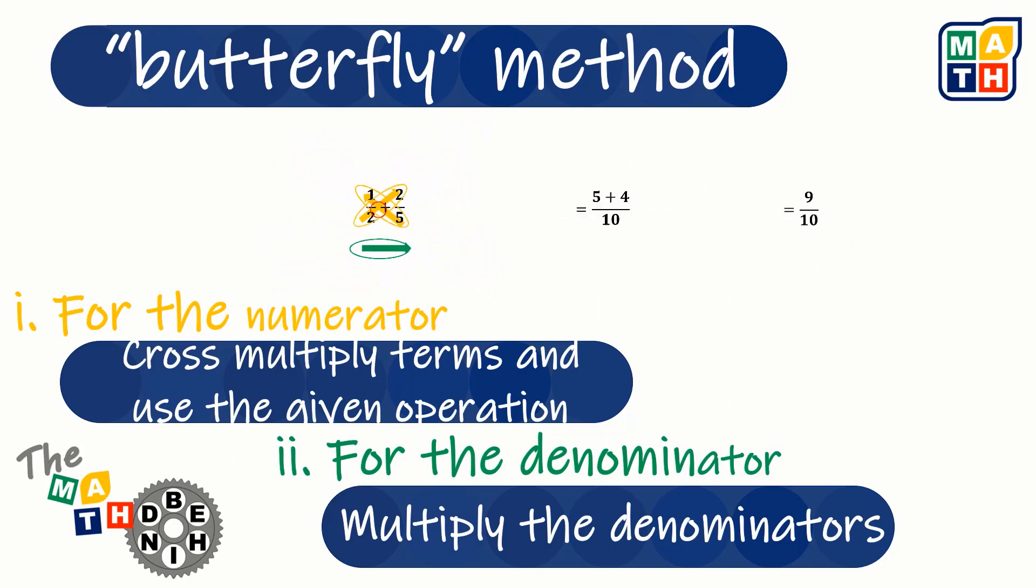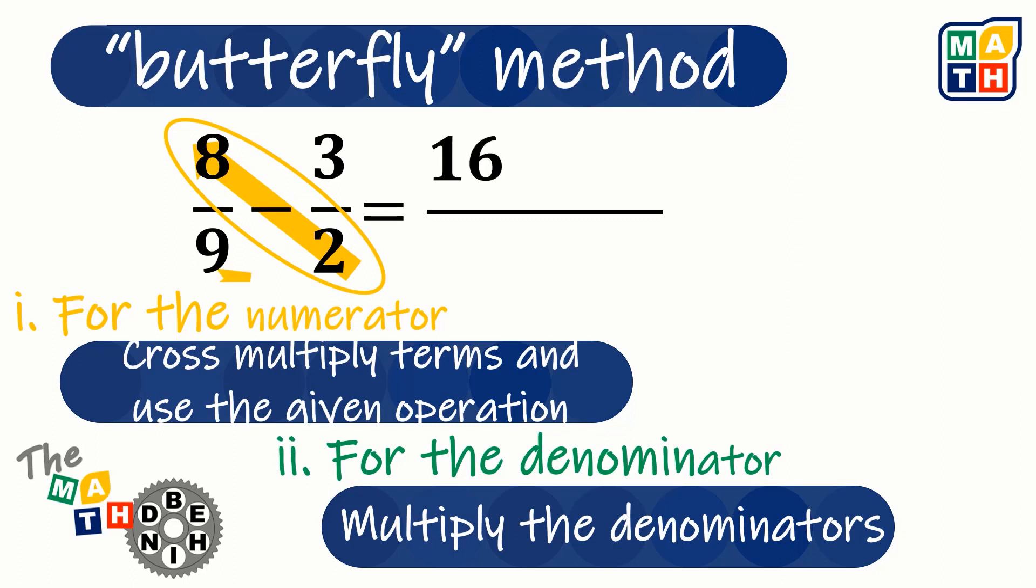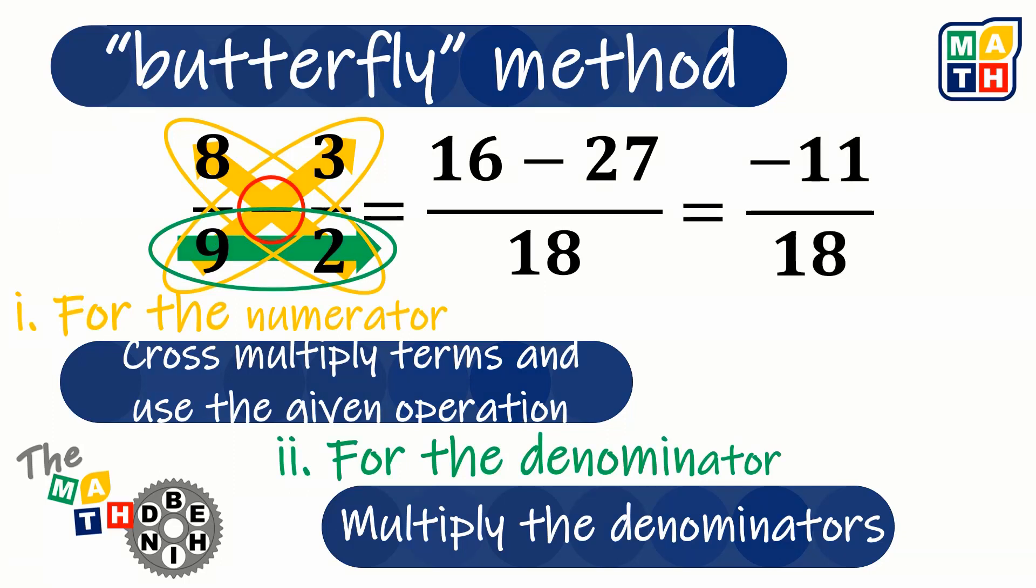For a different example, if we have 8 ninths minus 3 halves, we can have 8 times 2, which is 16, and then to be followed by 9 times 3, which is 27. Use the separator, subtraction, and for the denominator is 18, which will yield to negative 11 over 18.